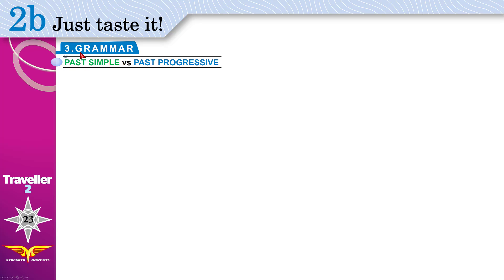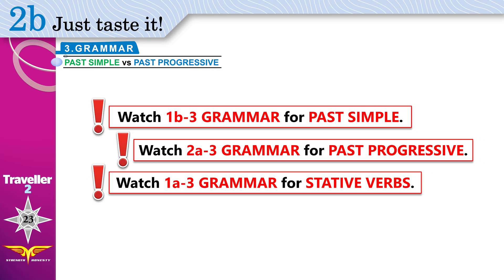Grammar: past simple versus past progressive. We've learned both tenses in previous videos. Please watch 1b3 for past simple, 2a3 for past progressive, and 1a3 for stative verbs. Stative verbs are words like: think, know, understand, like, feel, smell. You need to know how to use all of these before you continue.